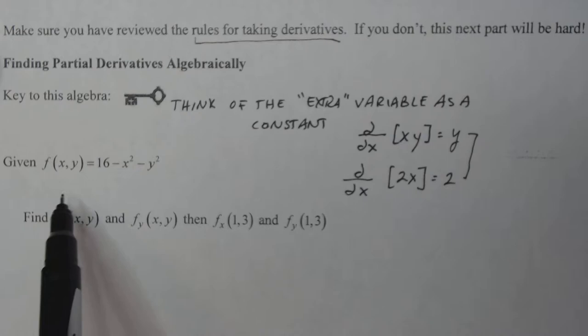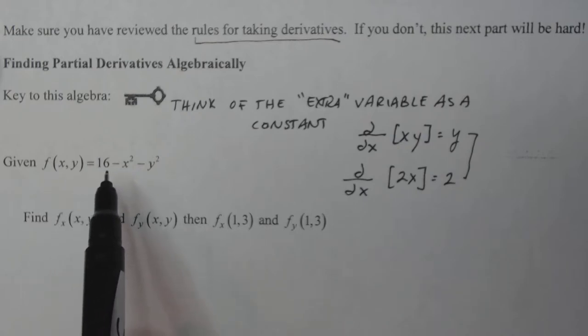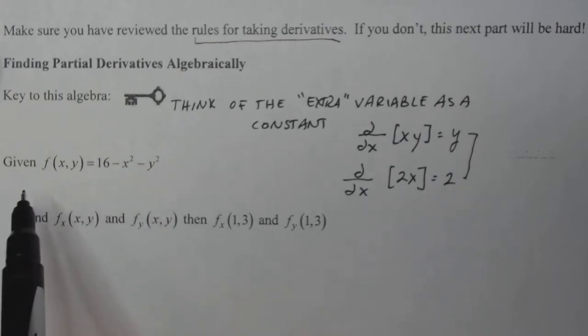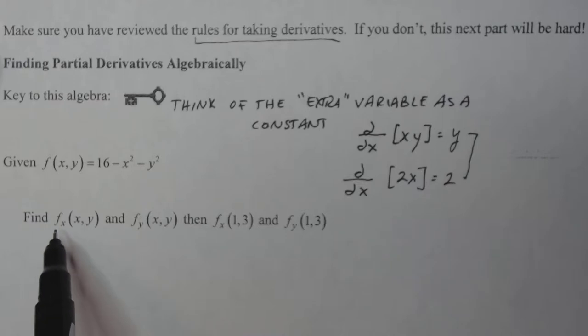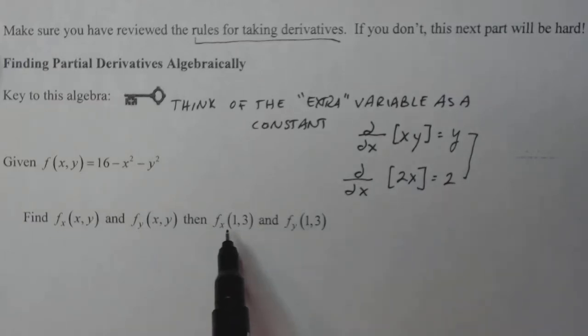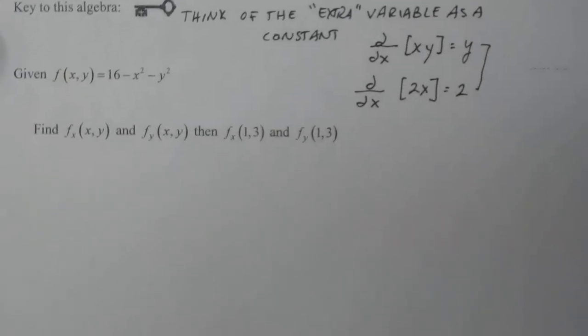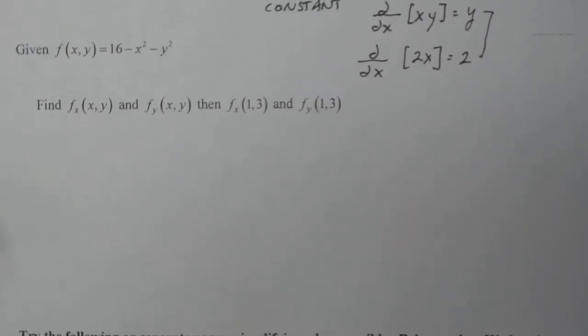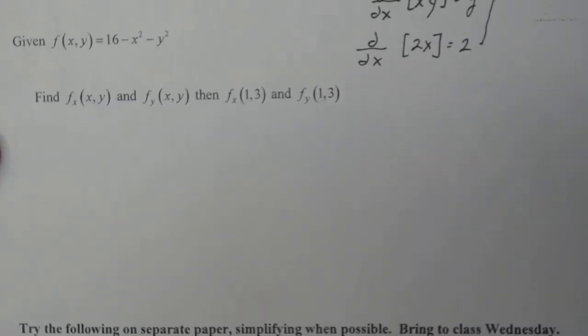Now, let's do an example here of a solid one. This is our function, 16 minus x squared minus y squared we've been working with. So we're going to find the partial with respect to x, the partial with respect to y, and then evaluate each of those at the ordered pair. And mostly kind of so that we can see how good our estimates were. Because it's nice to know that the estimates are pretty solid.